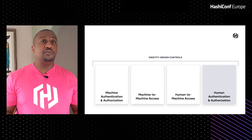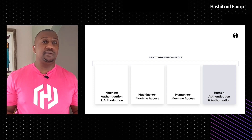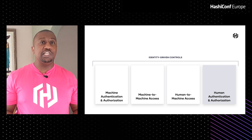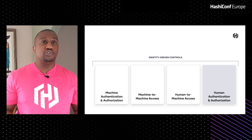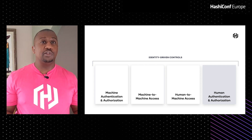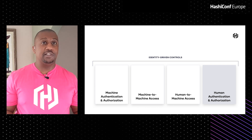The first area is machine authentication and authorization — how do we prove a machine's identity and authorize what a machine is enabled to do? The next area is machine-to-machine access: controlling which machines are allowed to speak to one another. Then we have the human element — controlling what humans are allowed to speak to what machines. And finally, we have the human authentication and authorization pillar. We're going to take these pillars and add them to our common application architecture.